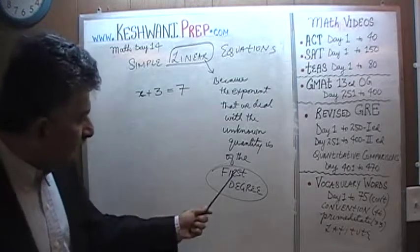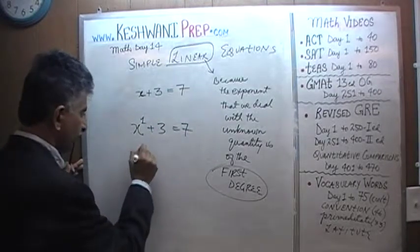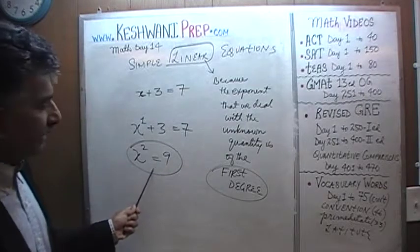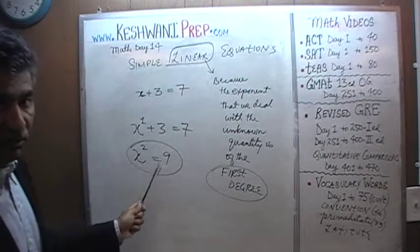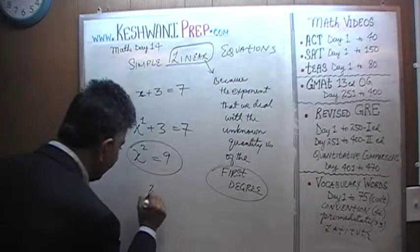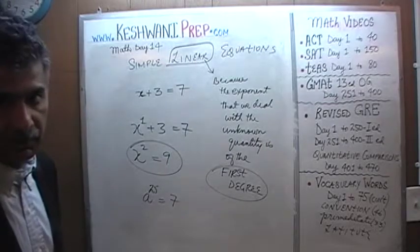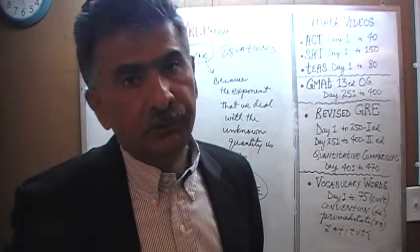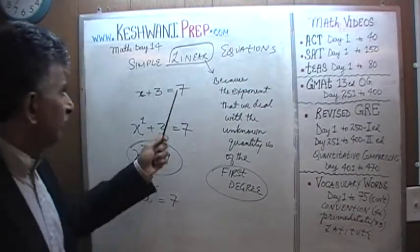All we are saying is that by 'first degree' we mean it is x raised to 1, not x raised to 2. Had it been x squared equals 9, that equation is no longer linear — it is of the second degree. And if I tell you a raised to 25 equals 7, that equation is of the 25th degree. A linear equation is linear because the exponents encountered are of the first degree — no variable will have an exponent higher than 1.